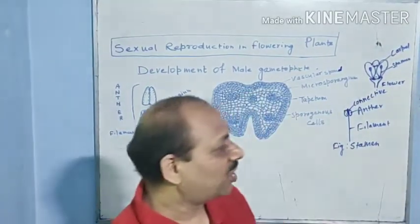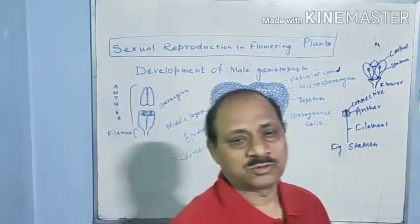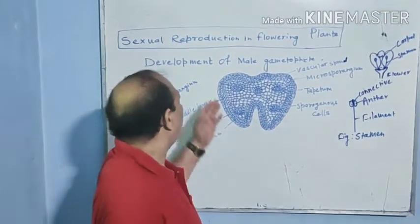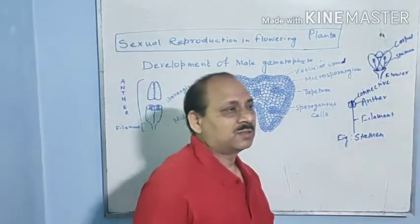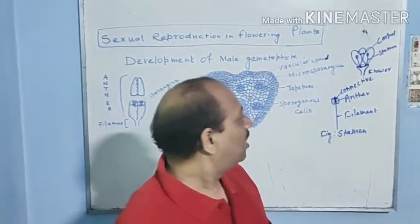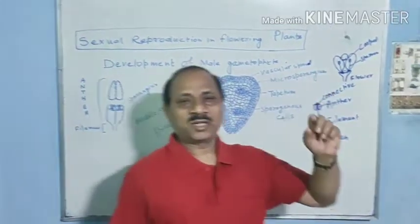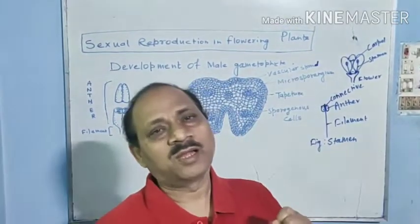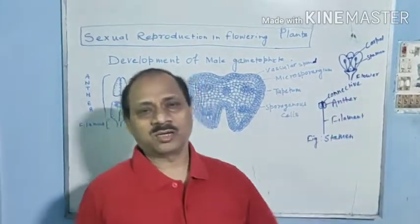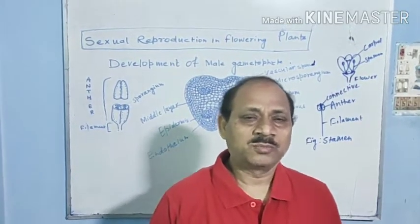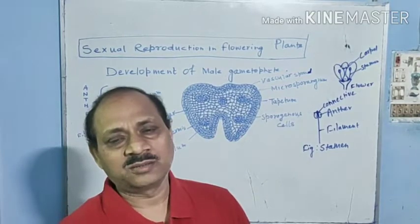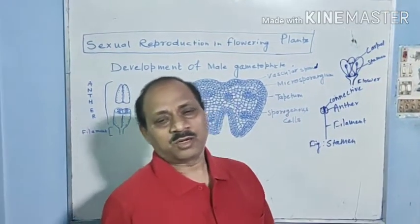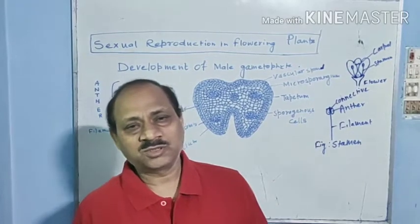Today I would like to discuss sexual reproduction in flowering plants. A flower is meant for sexual reproduction and consists of mainly four parts: Calyx, Corolla, Androecium, and Gynoecium. Calyx and Corolla are known as accessory organs because they do not take part in reproduction. Androecium and Gynoecium are reproductive organs which take part in reproduction.